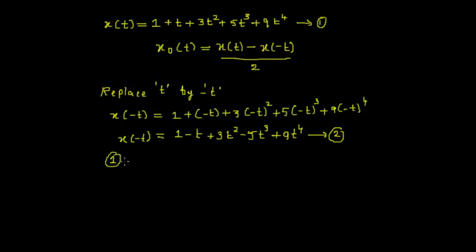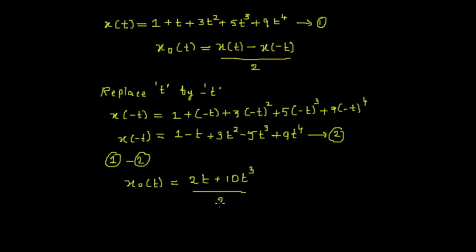To get the odd part, I subtract equation 2 from equation 1. The result before dividing is t plus t equals 2t, and 5t cubed plus 5t cubed gives 10t to the power 3. Dividing by 2, I get x_o of t equals t plus 5t to the power 3. This is the odd part of the signal.